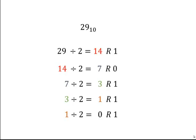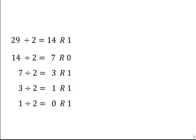But how does this lead us to the binary equivalent? If we look at the series of divisions, we notice that we have a remainder in each case, either a 1 or a 0.